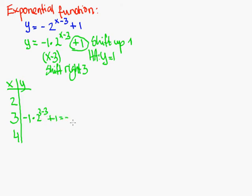This will be negative 1 times 2 to the 3 minus 3 is 0 plus 1. So let's write that a little bit further out. 2 to the power of 0 is 1. So negative 1 times 1 is negative 1 and negative 1 plus 1 is 0. So you get 0 there.